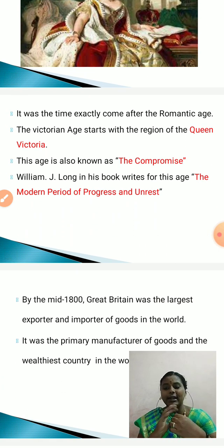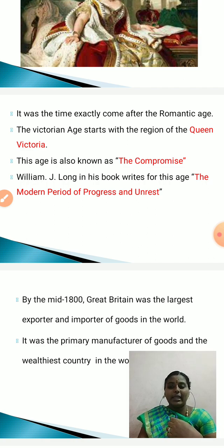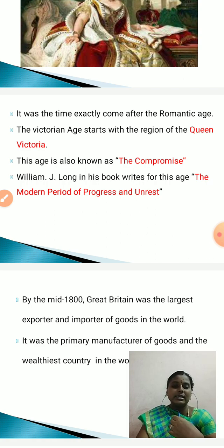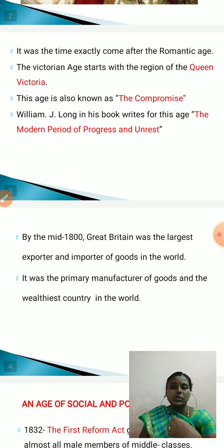Queen Victoria is often acclaimed for her great empire and the people of England adored and admired her greatly. By the mid-1800s, Great Britain was the largest exporter and importer of goods in the world. It was the primary manufacturer of goods and the wealthiest country in the world. During the Victorian period, England became more famous for its exports and imports.